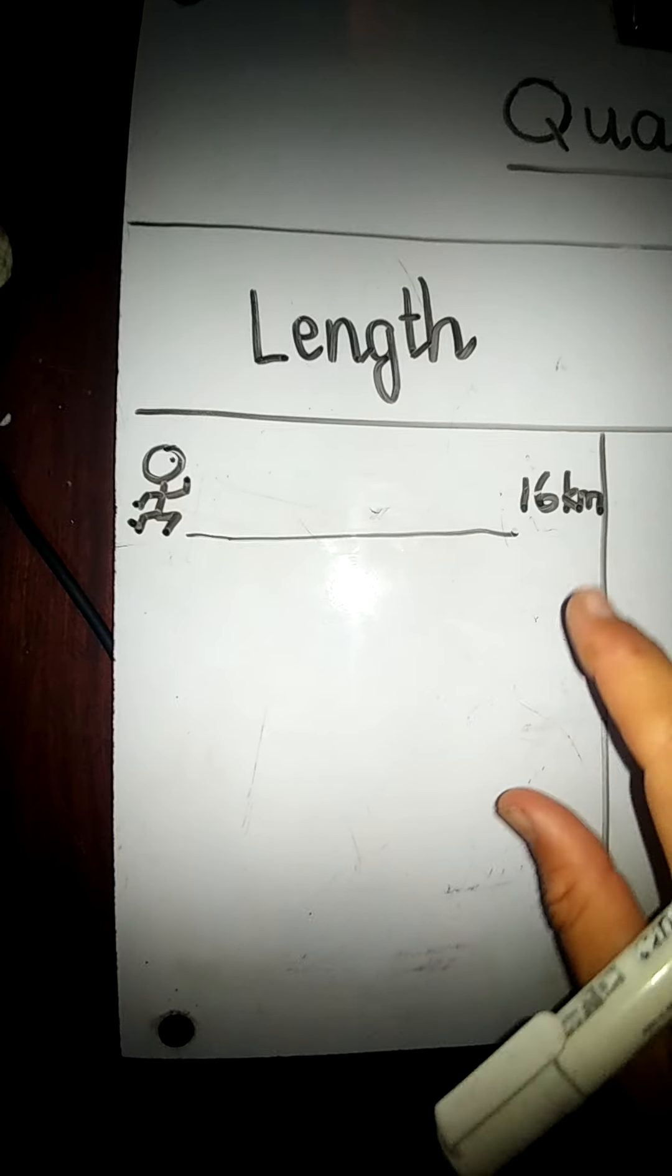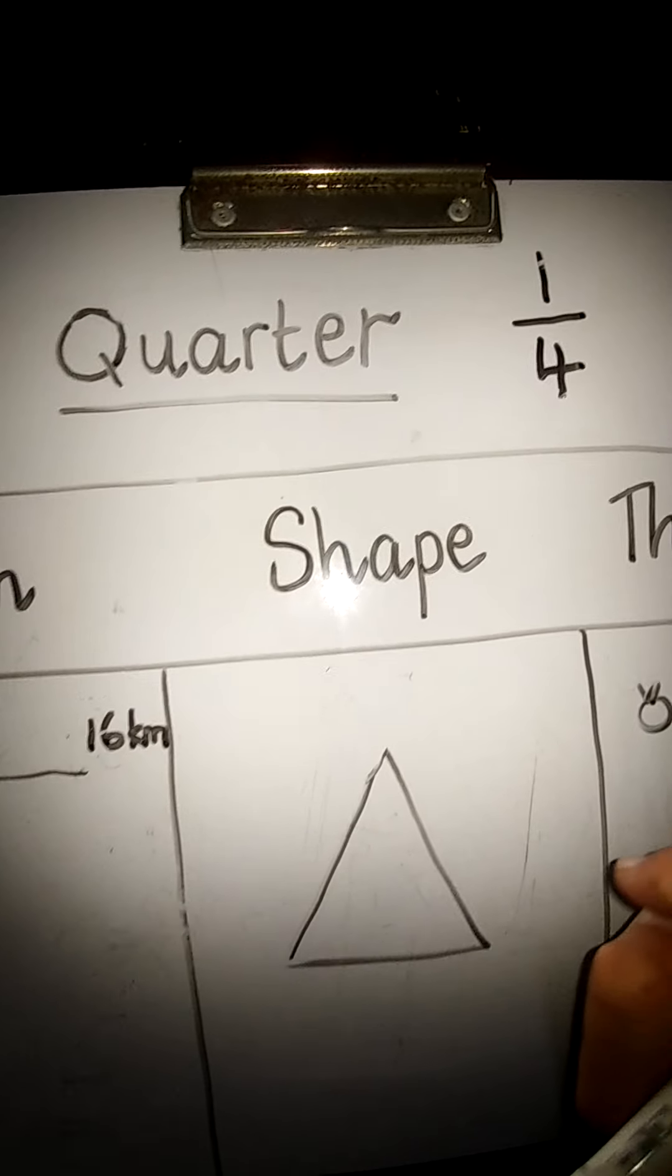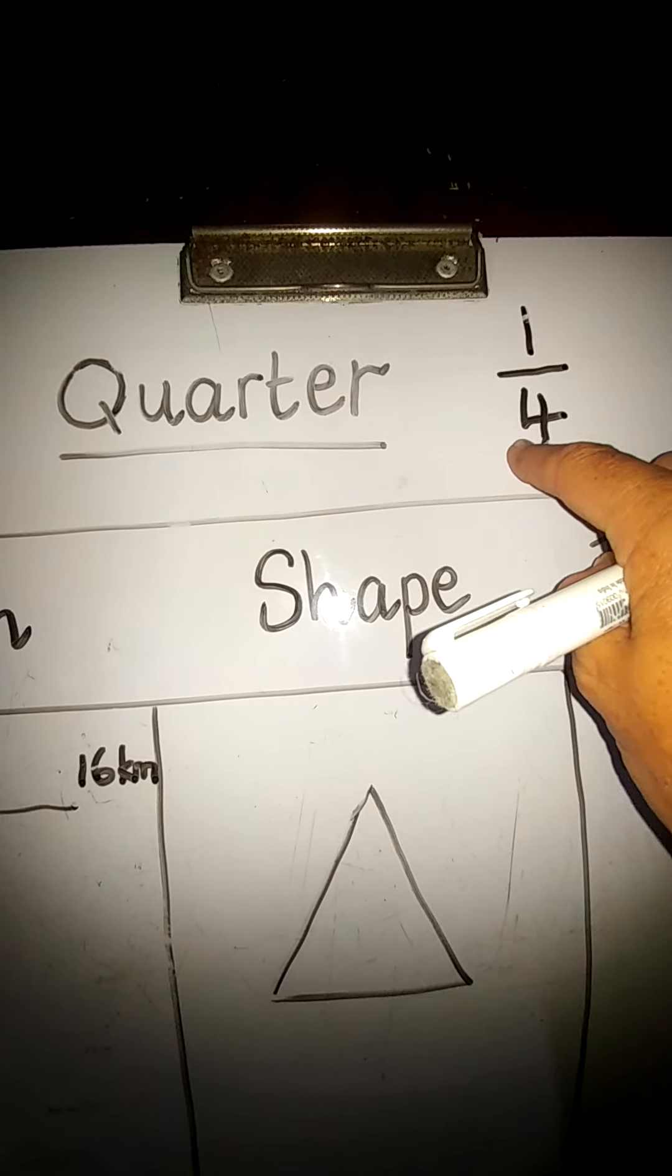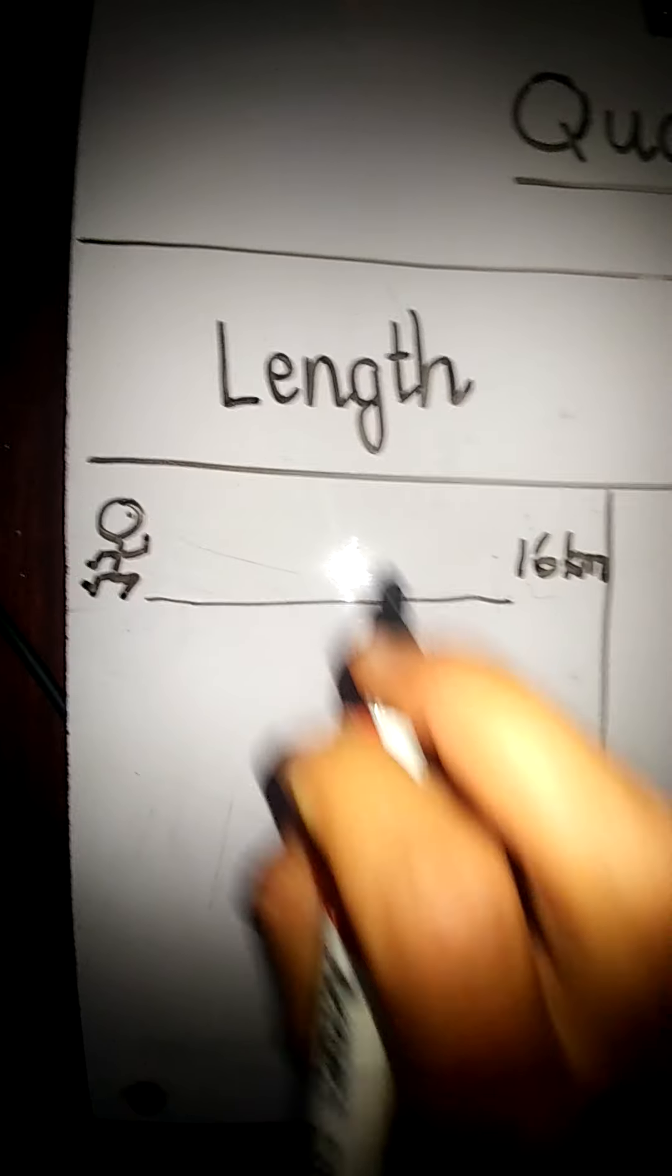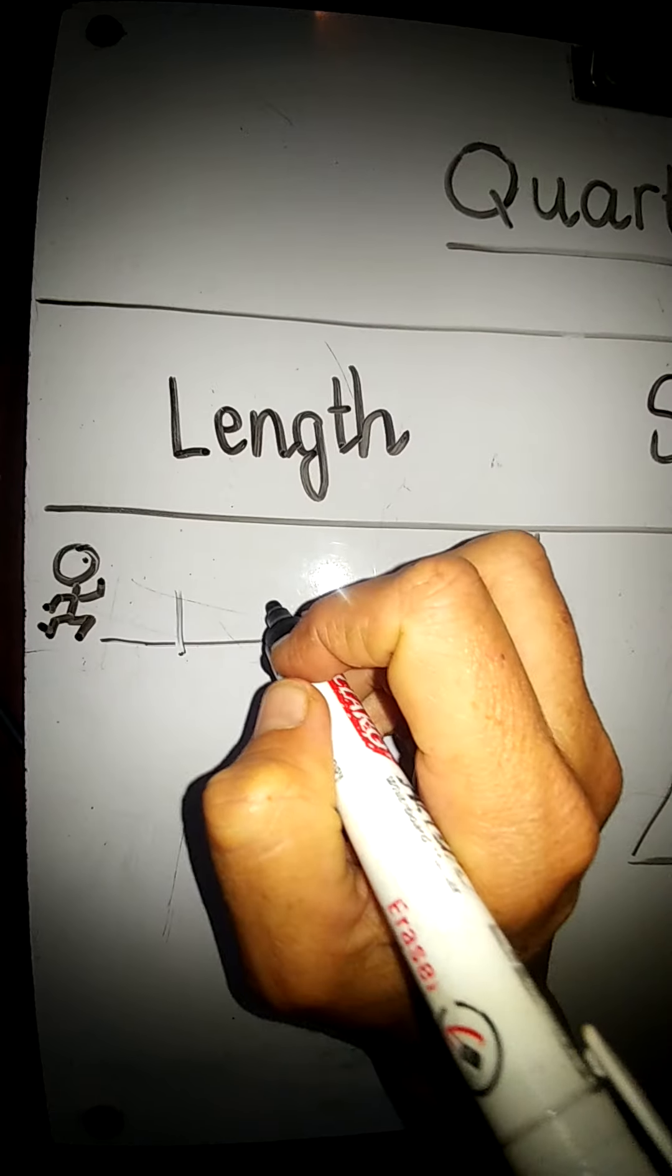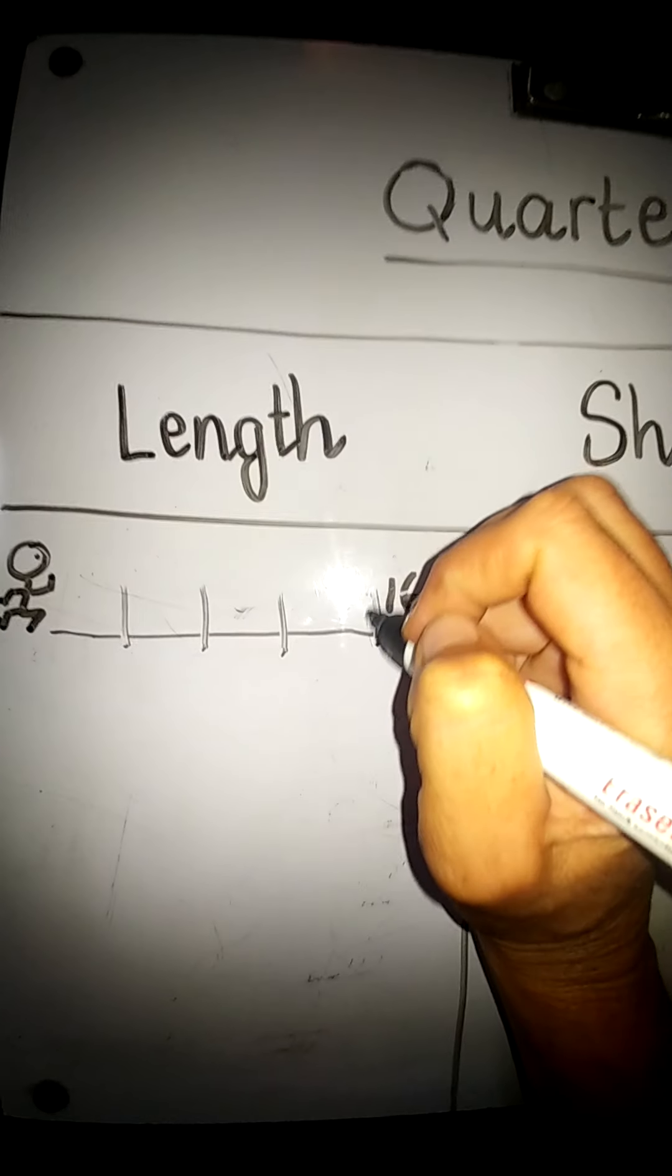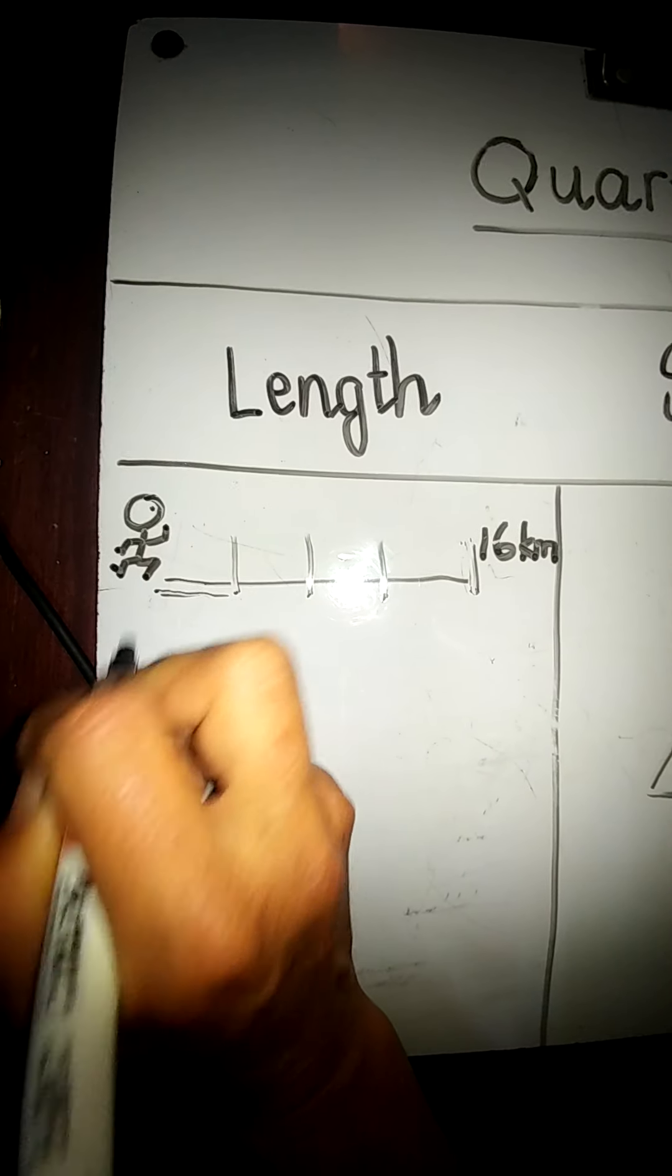I think Johnny should run less. So we're going to ask Johnny to run a quarter of the way, which means only a fourth. We need to divide his run into four equal parts. So one part, two parts, three parts, four, and he's reached the end here. So we only want Johnny to run this here.